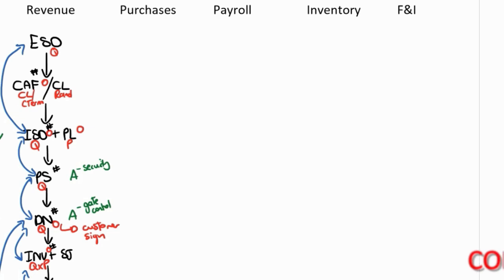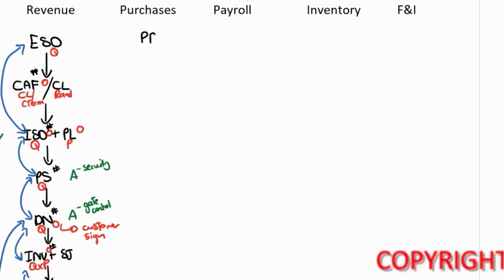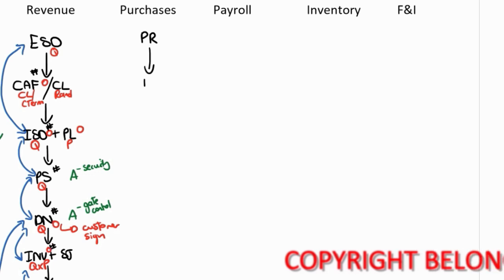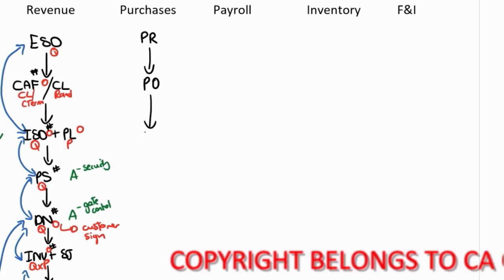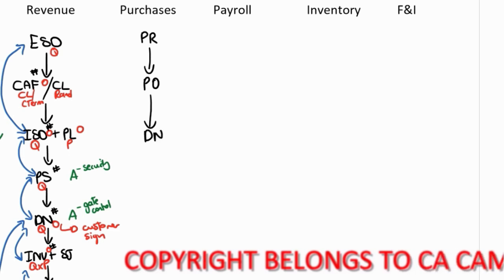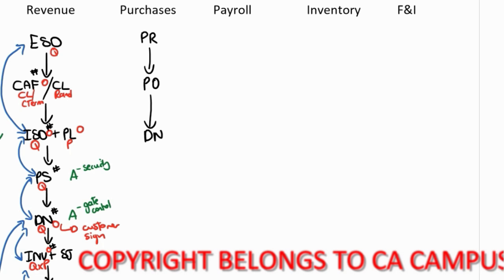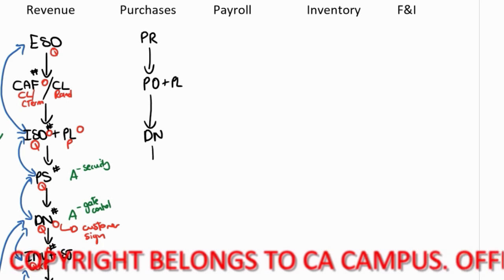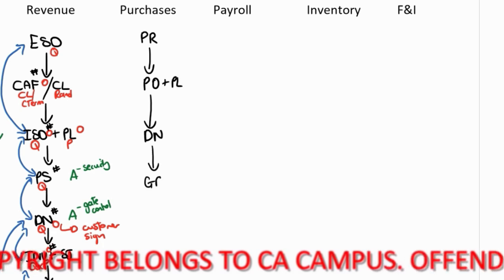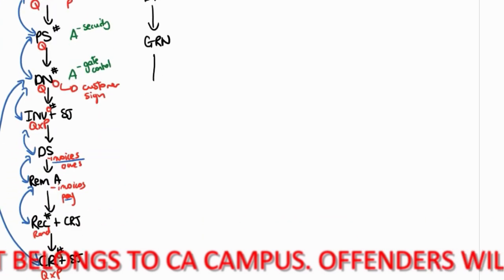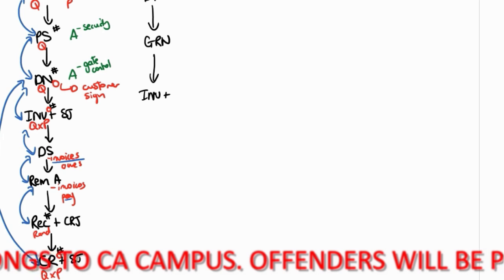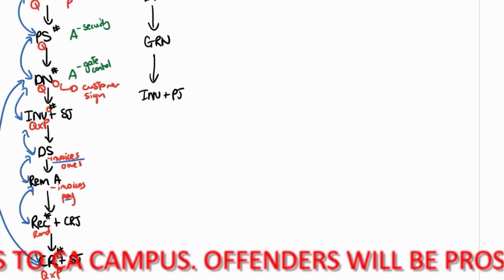The purchases cycle is the opposite to the revenue cycle, but we're going to do the exact same thing. It starts with the purchase requisition, then a purchase order is placed with the supplier — next to the purchase order we add the price list, because there must be a price with that. The goods are delivered with a delivery note, a goods received note is used to acknowledge what was received, and an invoice is given by the supplier and a purchase journal recorded.